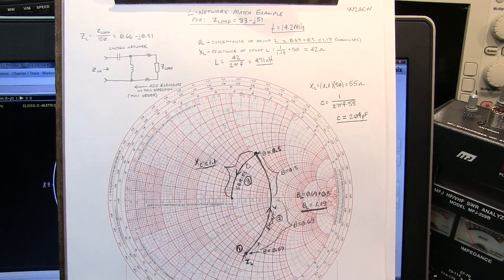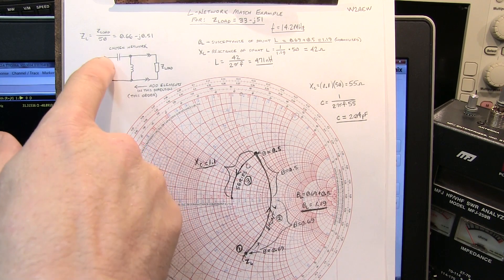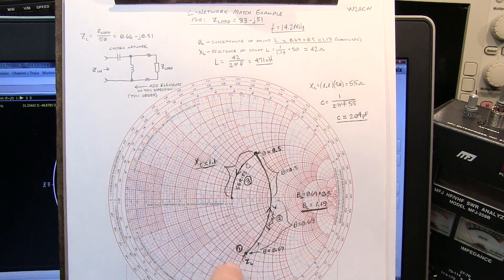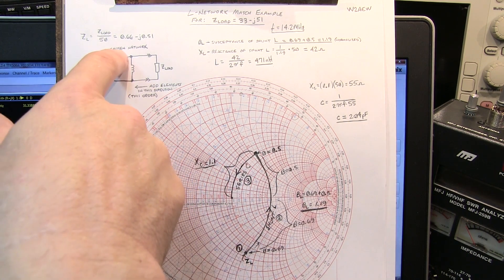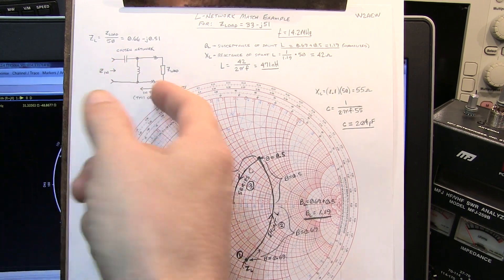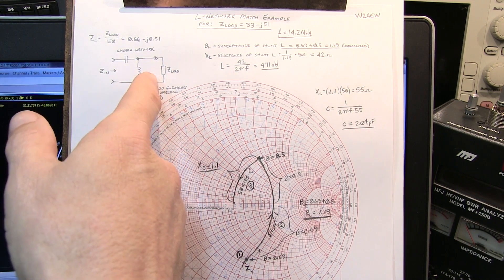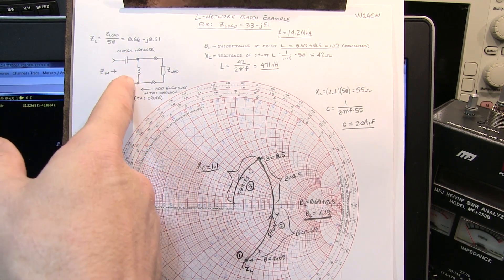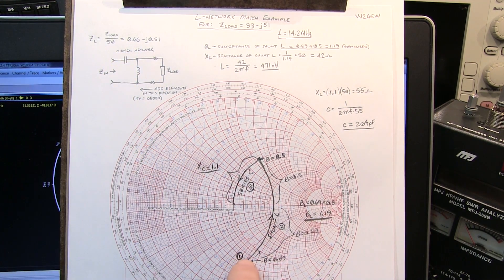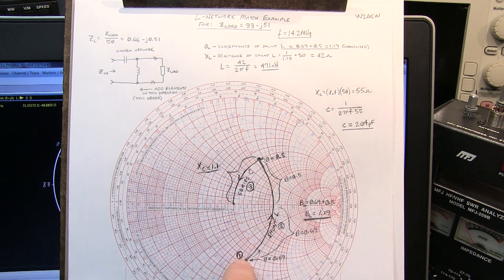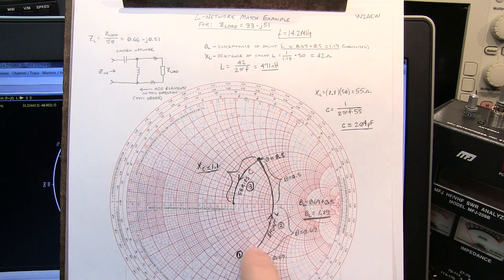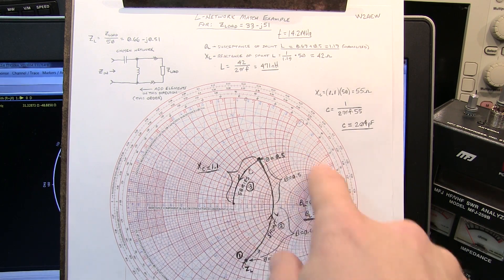Using the previous yin-yang diagrams, we've selected this network here, because that will take and properly match this load impedance location. So we're going to put a, first thing we're going to do is work from our load back. So the first thing we're connecting to a load is a shunt inductor. So the shunt inductor means that we're going to ride up along the constant conductance circles here. And we want to do that until we hit this constant resistance circle.